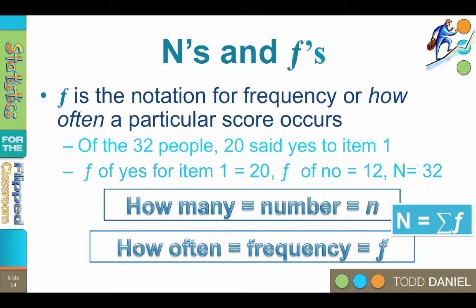f is the notation for frequency, or how often a particular score occurs. Of the 32 people who took the survey, 20 said yes to item 1. The frequency of yes for item 1 equals 20.